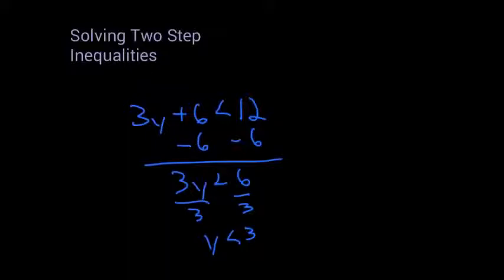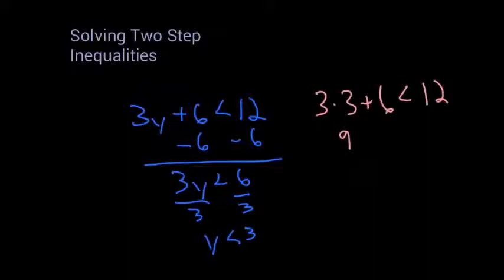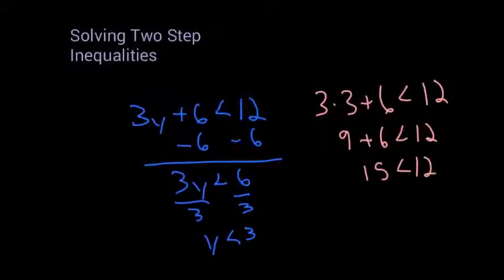I can put this back into my original inequality. So 3 times 3 plus 6 is less than 12. 3 times 3 is 9, plus 6 is less than 12. But 9 plus 6 is 15, which is not less than 12. That's not a true statement — I made a mistake. I need to go back and see what I did wrong.